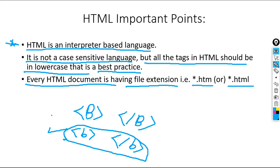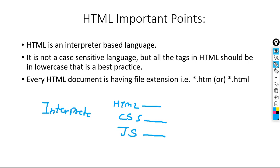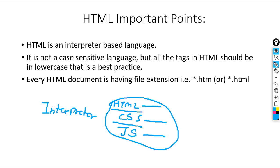Let me explain why HTML is an interpreter-based language. The browser understands HTML, CSS, and JavaScript because it has an HTML parser, a CSS parser, and a JavaScript parser, and inside the browser there is an interpreter which interprets this code line by line — one line at a time. JavaScript executes on top of HTML and CSS, manipulating both, and it renders in the browser through this interpreter.